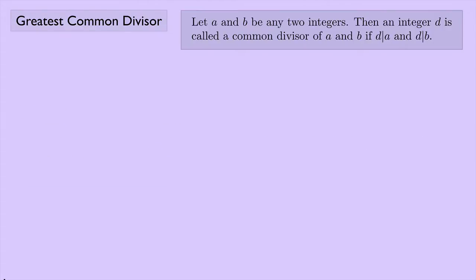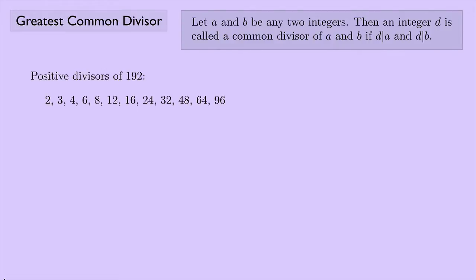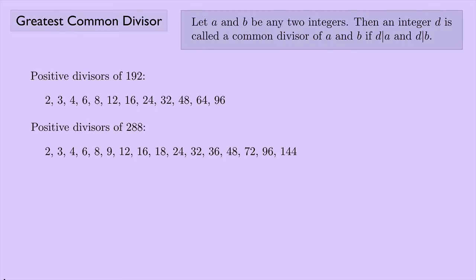So here's the definition of common divisor. And let's look at the positive divisors of 192. Here they are — if you list them all out, I hope I didn't miss any. And here are the positive divisors of 288.